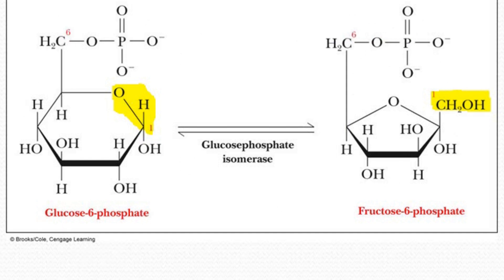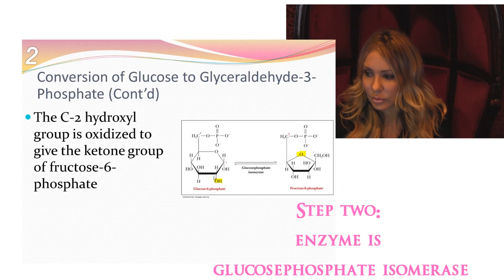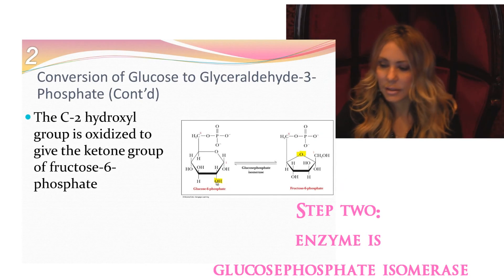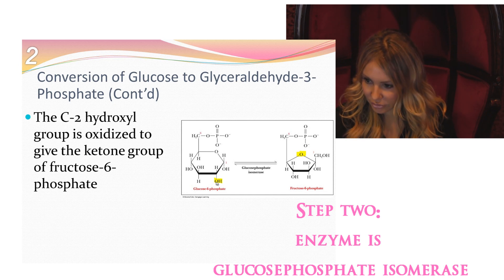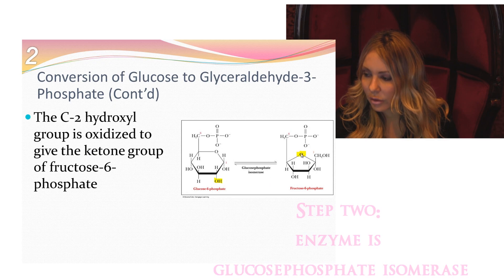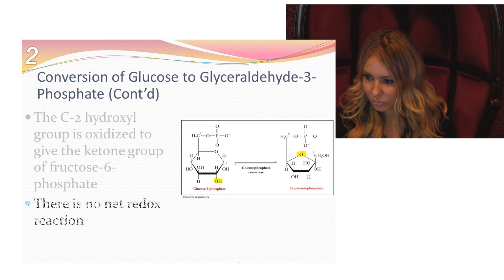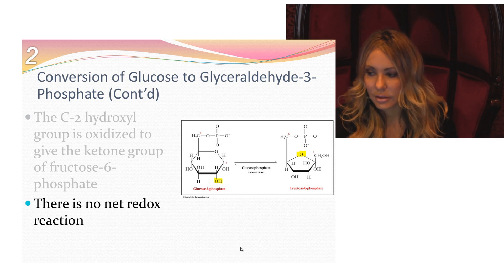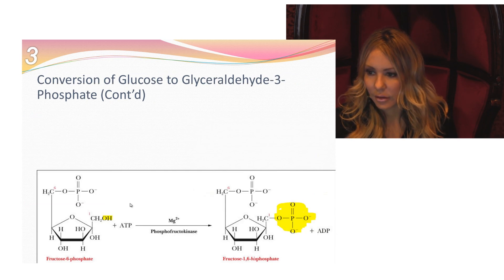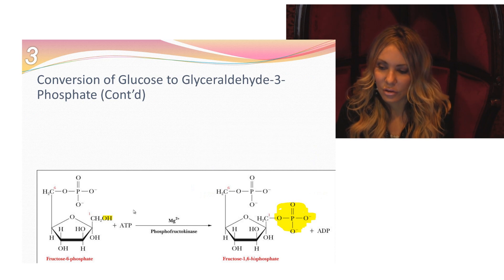This reaction is catalyzed by glucose phosphate isomerase, and this step is not regulated. The C2 hydroxyl is going to be oxidized to give the ketone group of fructose-6-phosphate. Following the molecules: we take this hydroxyl — here's the oxygen — and this is our C1 that used to be the aldehyde group. There is no net redox in this reaction.